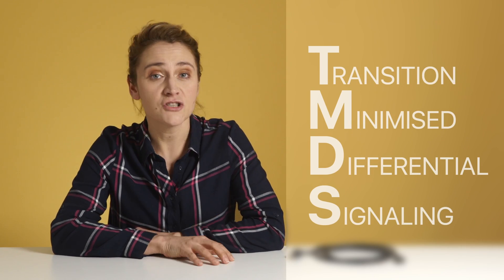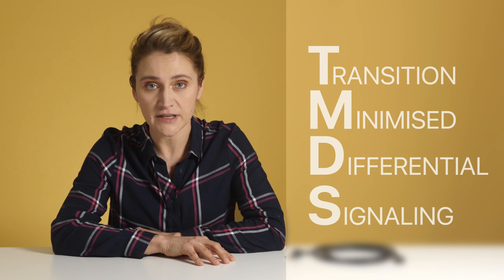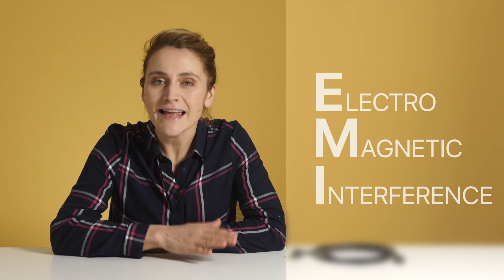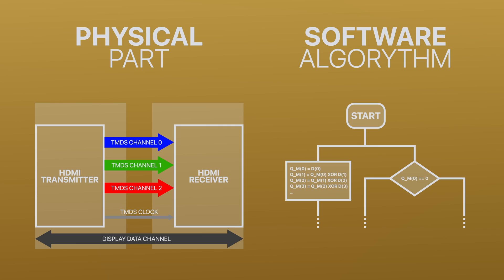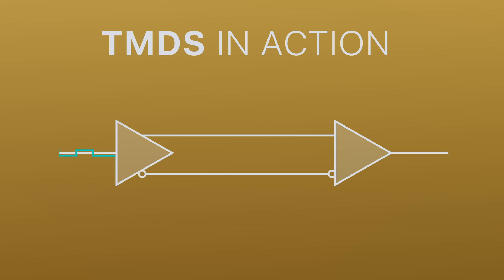Before we go through the different versions, we need to understand what TMDS is. Digital signals are usually characterized by low voltages and low currents, and therefore are very prone to electromagnetic interference. To reduce it as much as possible, Silicon Image, one of the founders of HDMI, created Transition Minimized Differential Signaling. TMDS is made of two parts: a physical connectivity part and a software algorithm that codes and decodes the information. This reduces EMI and allows clock recovery even over long distances. The physical part includes twisted pairs, just like in an Ethernet cable, meaning the signal is sent on two wires out of phase with each other, and when the signal reaches the receiver, the signals are merged back into one.